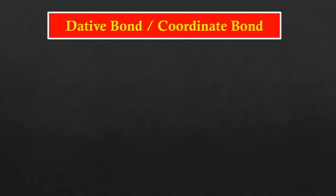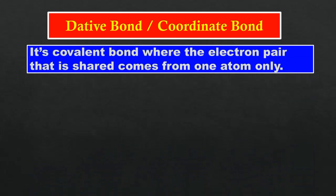Now we look at the dative bond, also known as coordinate bond. Dative bond is a covalent bond where the electron pair that is shared comes from one atom only.